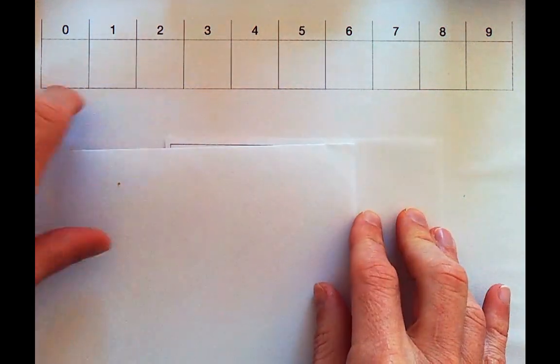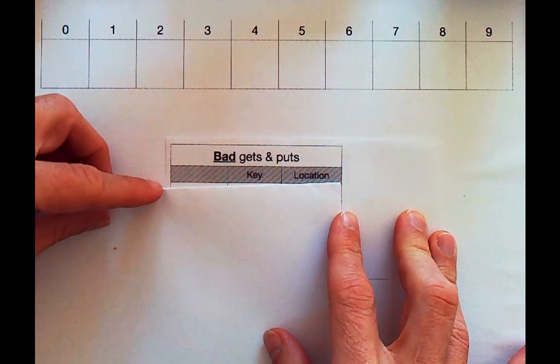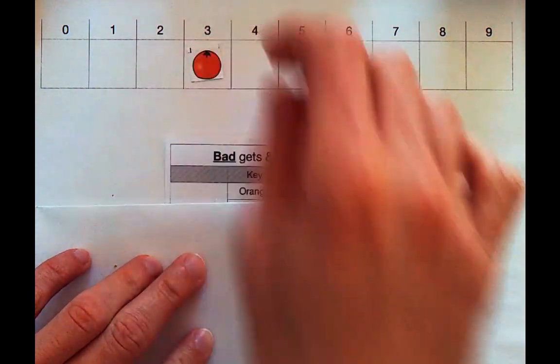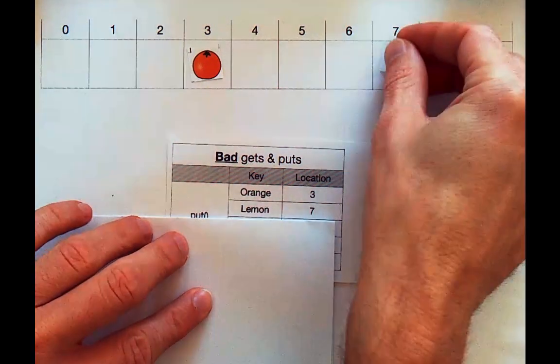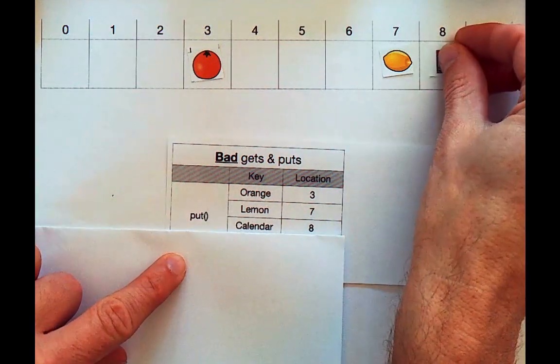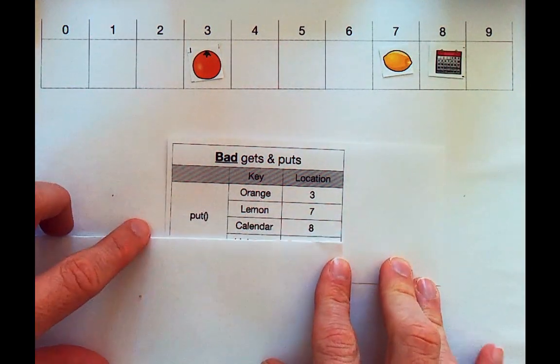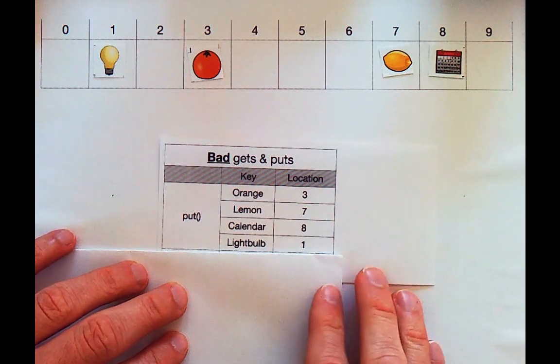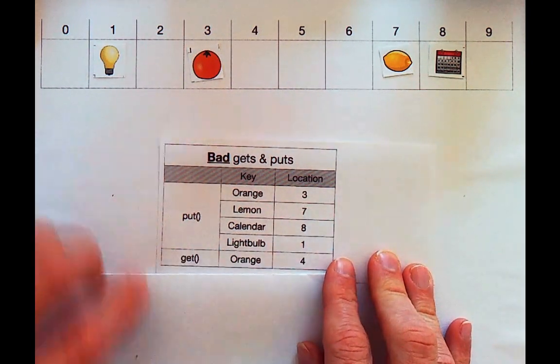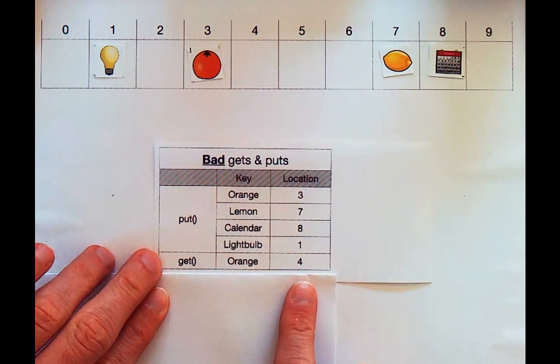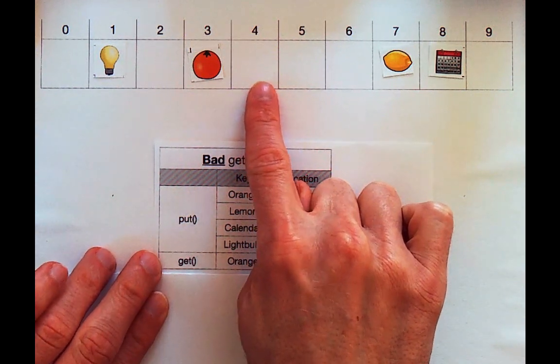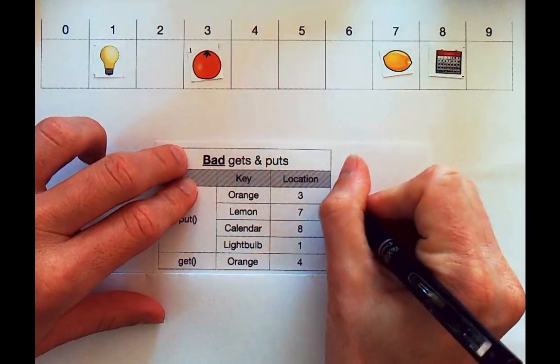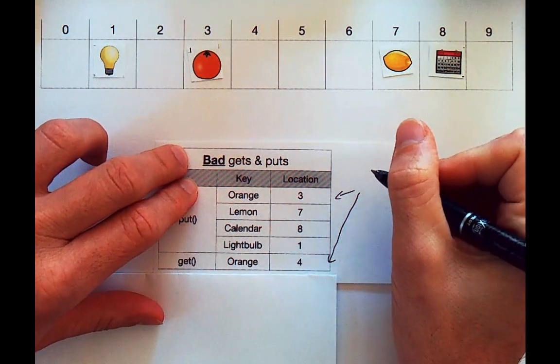So we're going to do another example, and this time we'll encounter some problems. This time we'll start over, but we'll encounter a particular problem that we need to be concerned about. So this will be kind of a counter example, a bad example of things that can go wrong. Just like before, we'll do a sequence of puts. We'll put an orange in location three, and then we'll put a lemon in location seven, and then we'll put a calendar in location eight. And again, the location is completely determined by whatever this process is that we'll come back to in a bit. And then a light bulb goes in one. Imagine that at this point, I want to go ahead and do a get. I want to retrieve something, and I say, hey, I'd like to get an orange. Where is that orange at? If I ask my process here, and it's inconsistent, if it tells me an orange is in box four, I'll go out and look in box four. There's no orange there, and I'll assume it's not in my collection of data. So that's one of our goals here, that we need consistency. If we ask for the same item, or items that we consider to be equivalent, we need to get a consistent answer.